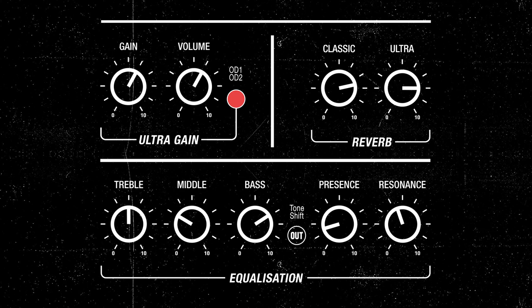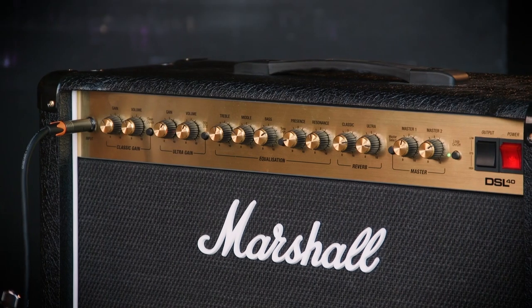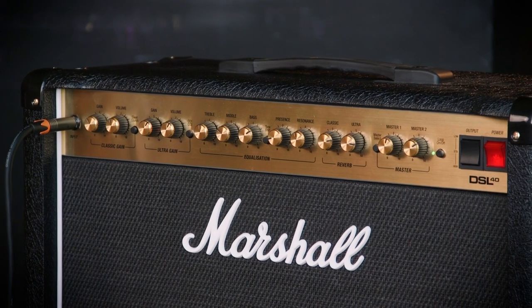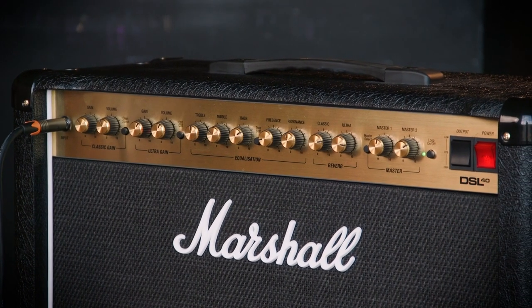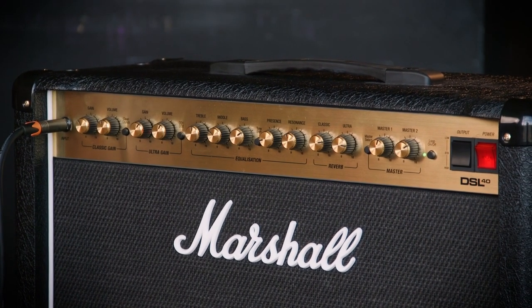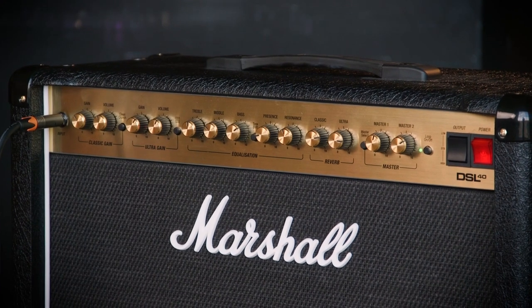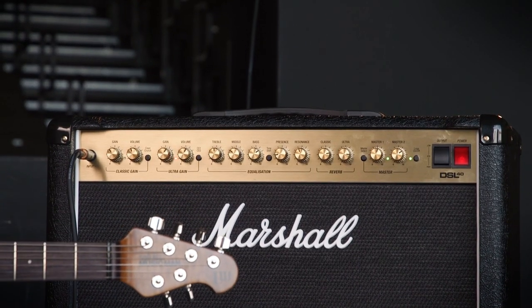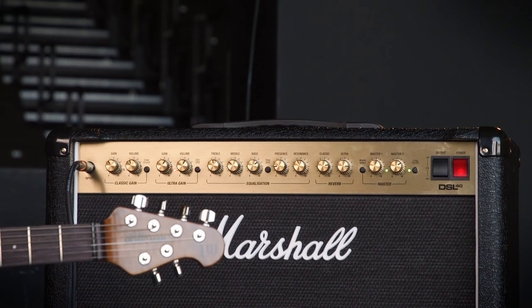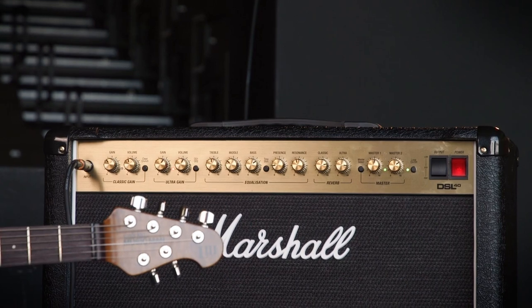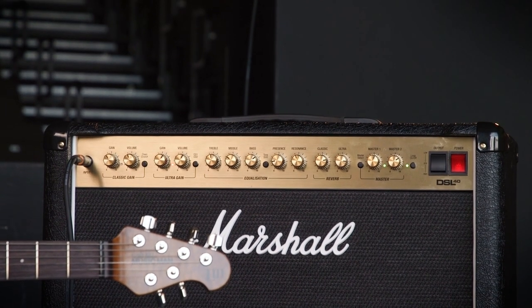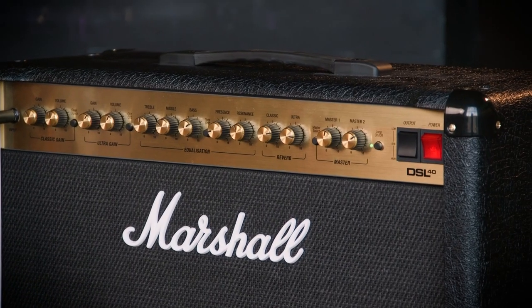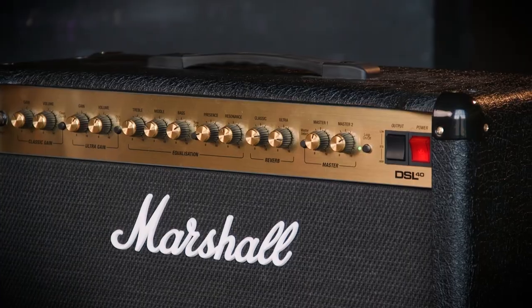The treble on this example is set to halfway. The middle is cut, so that's around 10 o'clock, and the bass is at 2 o'clock. For the presence, that's dialed back a little bit just to warm it up, so it's just below 9 o'clock, and the resonance is set just below halfway.